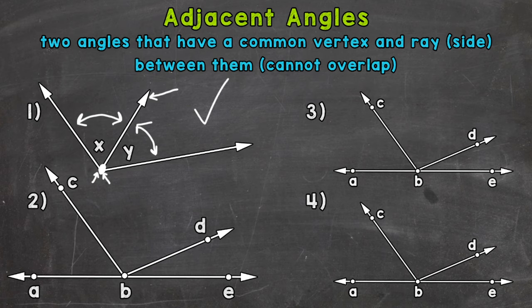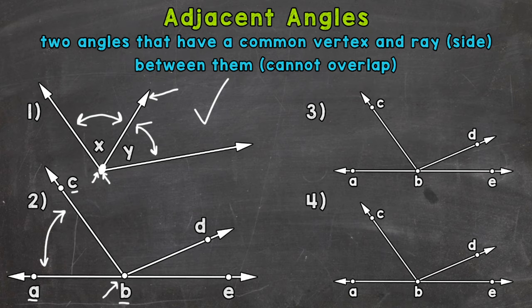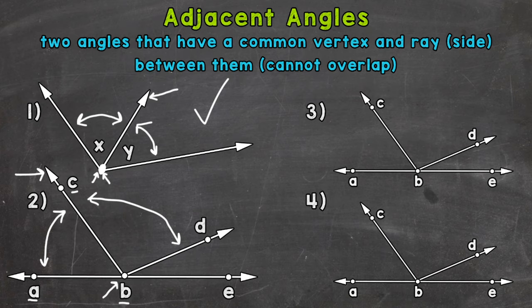Let's move on to number two, where we're going to find two pairs of adjacent angles within those multiple angles. We'll start with angle ABC — this angle right here. The vertex is at point B. Remember, the vertex is where two rays or sides meet to create the angle. Angle DBC, this angle here, would share that vertex and also share this side right here. So angles ABC and DBC would be adjacent.